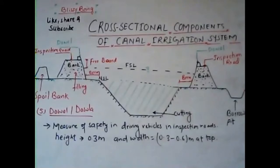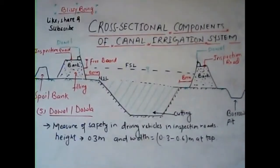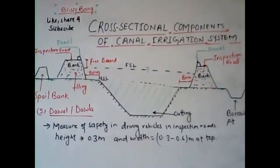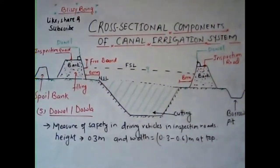The next cross-sectional element is the dowel or dowla. It is the raised portion provided on the canal side of the service road for the safety of vehicles moving on it. It is provided above the full supply level by the margin of freeboard. Practically, dowels act as curbs on the side of the roadway towards the canal. The height of the dowel above the road level is 30 cm and the width at the top varies from 30 cm to 60 cm.